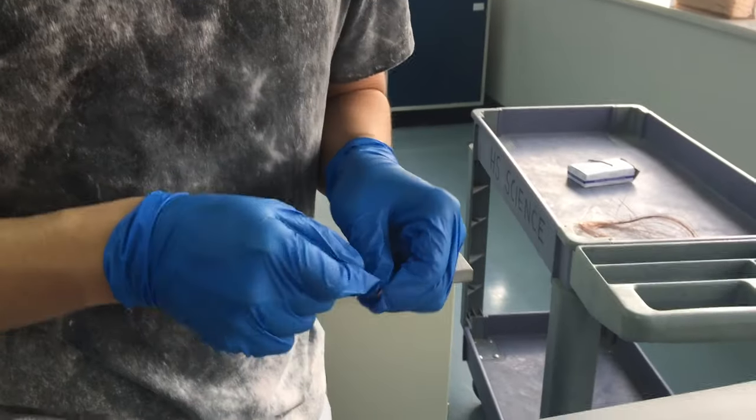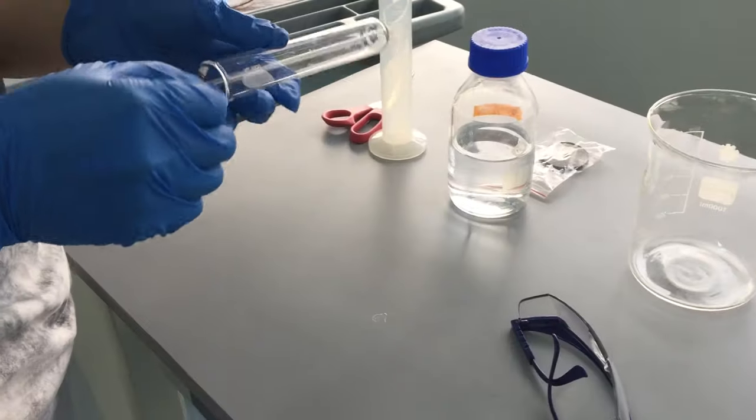Wrap the copper wire around the magnesium ribbon to secure the ribbon inside the test tube.